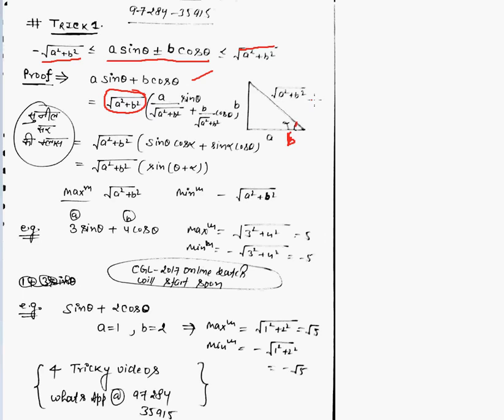This angle is alpha. I promise you will become this. So can I write a upon root a squared plus b squared as cos alpha? Cos alpha is base upon hypotenuse.